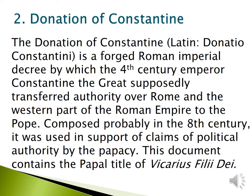Donation of Constantine — in Latin, Donatio Constantini — is a forged Roman imperial decree by which the 4th century Emperor Constantine the Great supposedly transferred authority over Rome and the western part of the Roman Empire to the Pope. Composed probably in the 8th century, it was used in support of claims of political authority by the papacy. This document has been used by the papacy.